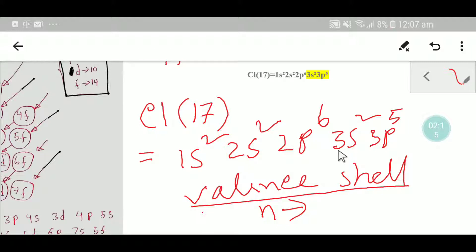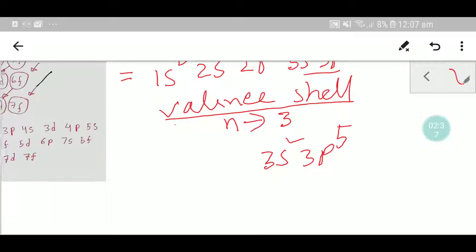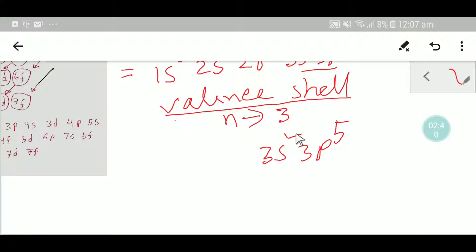So our valence shell is 3s2 and 3p5. And we know that valence electrons are the electrons of the valence shell.